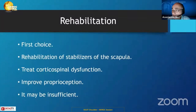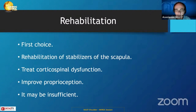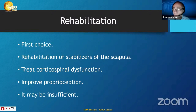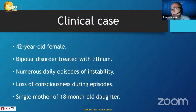Rehabilitation remains the first choice in patients with multi-directional instability: stabilize the scapula, strengthen the rotator cuff, treat corticospinal dysfunction, and improve proprioception. In some patients it may be insufficient and surgery is needed. Dr. Rockwood used to treat patients with posterior-inferior instability with rehab for one full year before considering that it was not working, because we know this is a long road to walk together with the patient.